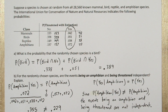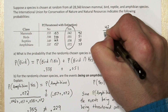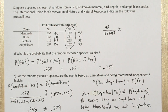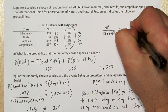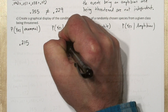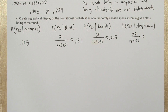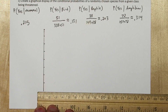So if we know we've randomly selected a mammal, what's the probability that mammal is threatened with extinction? Overall we have 42 mammals threatened out of a total of 153 plus 42, which turns out to be about 21.5% of mammals being threatened. Using the same approach for the other three classes, we get all the conditional probabilities. It looks like amphibians are in the most danger.